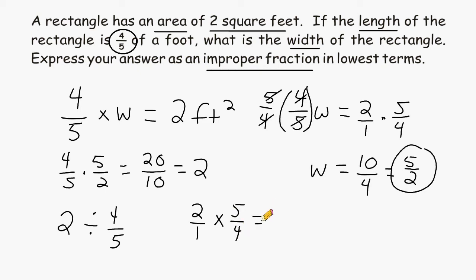Next, we can multiply the numerators together, 2 times 5 is 10, and then multiply the denominators together, 1 times 4 is equal to 4.